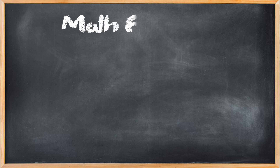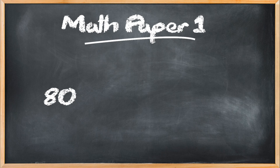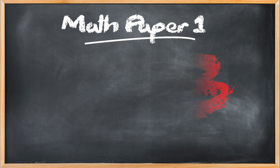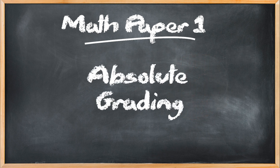Let's see how grades are normally calculated in school. Let's say you have solved math paper one, which is out of 80 marks, and you've scored 60. So 60 out of 80, if you do the math, is 75%, which is a B. But that's the wrong way to do it, because this is absolute grading — the grades as per percentage are already fixed without taking into account the difficulty level of the exam.